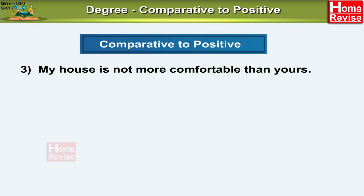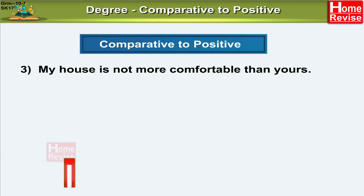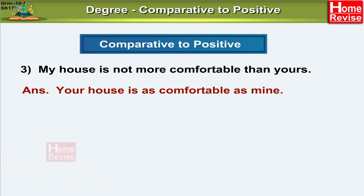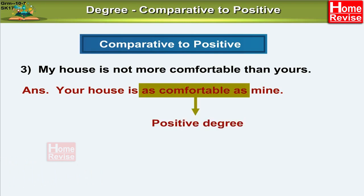Let's take one more example. My house is not more comfortable than yours. Here, the comparison is between two houses — mine and yours. We already have used a negative comparative degree. So our positive degree is not going to contain any negative word. The positive degree begins with: your house is as comfortable as mine. 'As comfortable as' denotes the positive degree of comparison, and we have not changed the meaning.